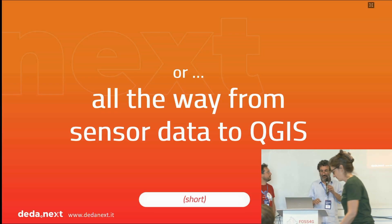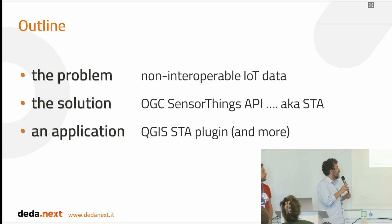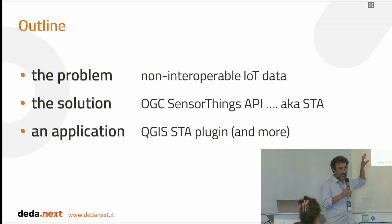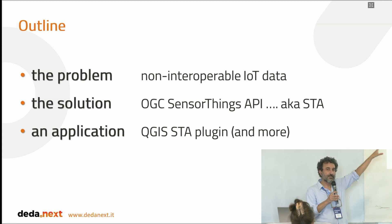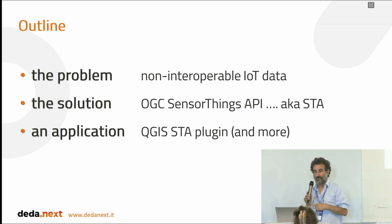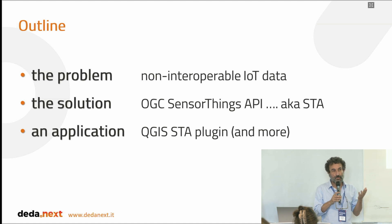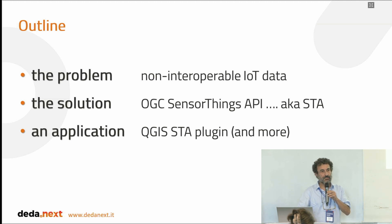The title is quite long, so we decided to have a shorter one. The presentation will be split into three parts: I will introduce the problem, talking about a real history of non-interoperable IoT data. Then I will give the floor to my colleague Luca, who will explain the solution based on the SensorThings API standard. And then we will conclude by presenting a real application in a medium-sized city in Italy called Ferrara.